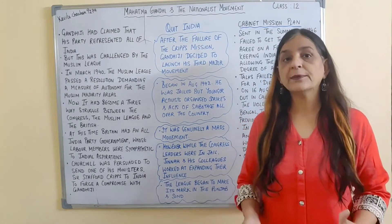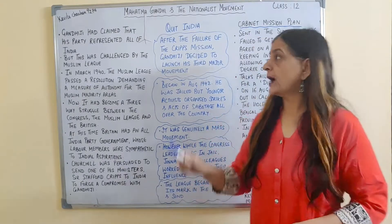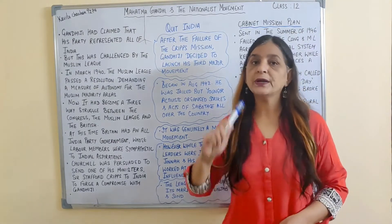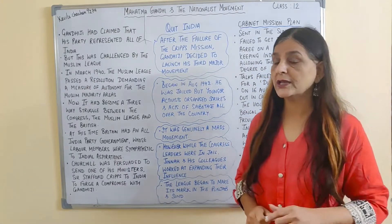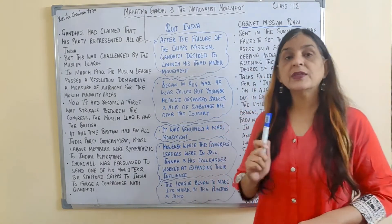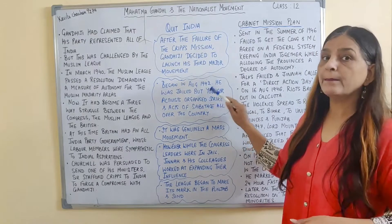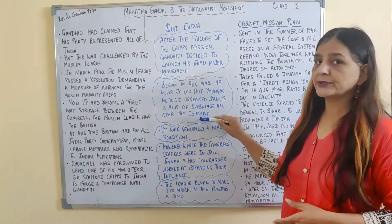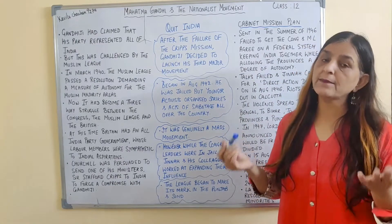But the talks failed between Mahatma Gandhi and Sir Stafford Cripps. After this, Mahatma Gandhi decided to launch his third major movement. The first was the Non-Cooperation Movement, the second was the Civil Disobedience Movement, and now he launched the Quit India Movement, which began in August 1942. Mahatma Gandhi was jailed, but other young activists organized strikes and acts of sabotage all over the country. It was genuinely a mass movement.